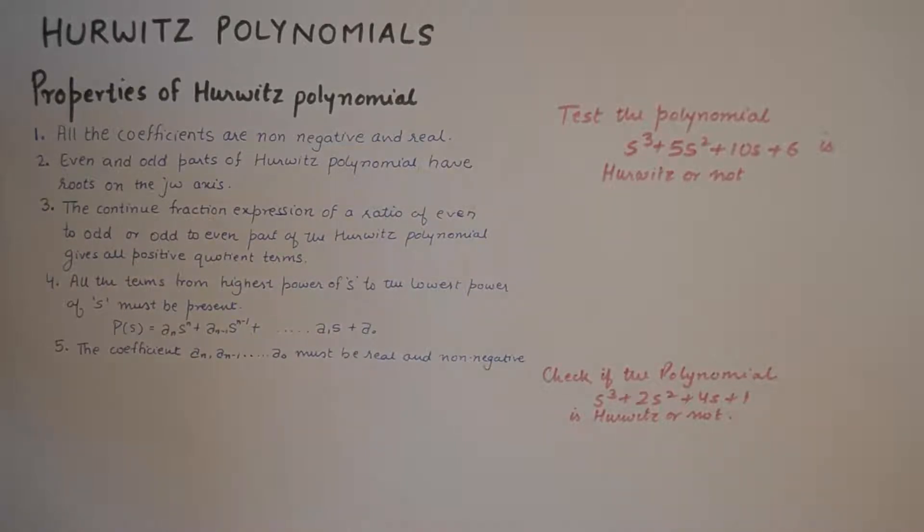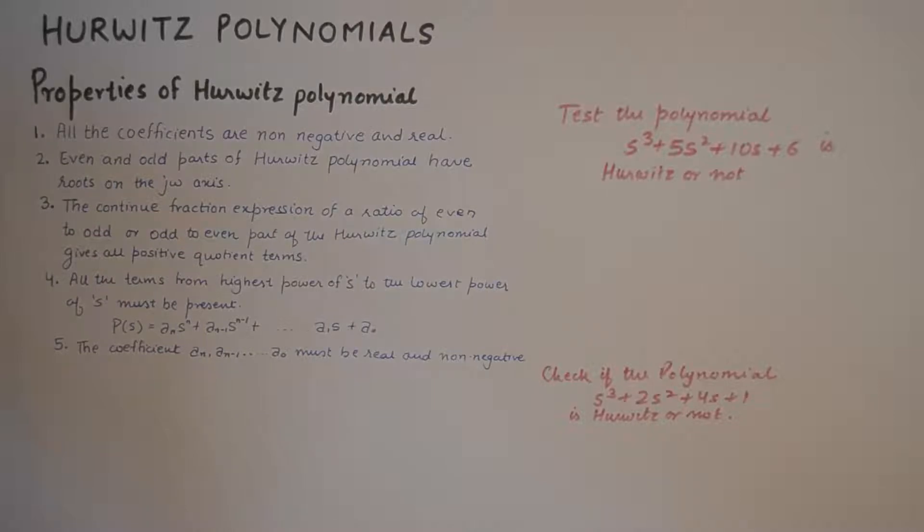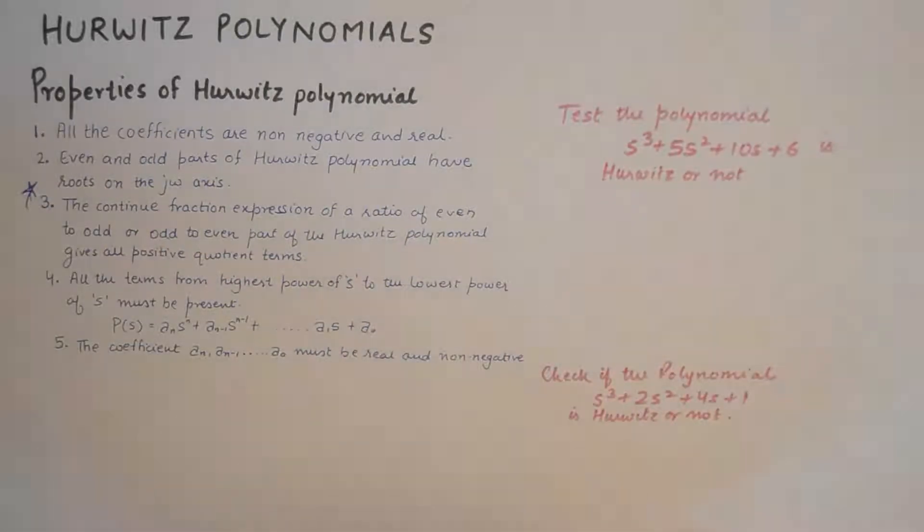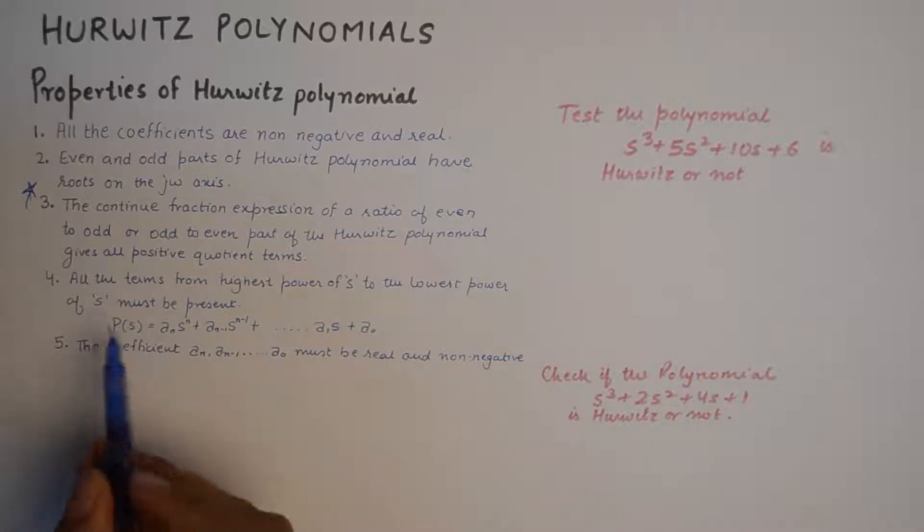Now this is the property which is supremely important, because property number three is necessary and sufficient condition for polynomial to be Hurwitz. So I'll mark this property as the star property because we are going to solve these two questions using this property.